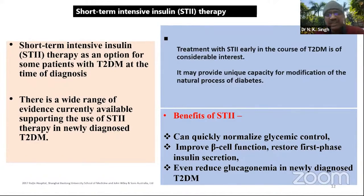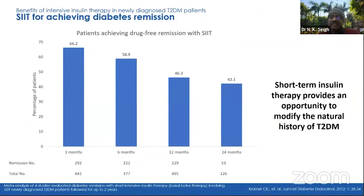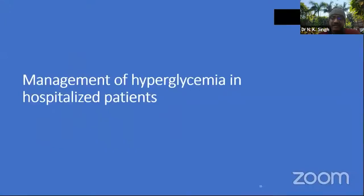My urge is that in specific situations, think about STIIT, because this is now an ADA recommendation — initial therapy has the advantage of being effective where other agents are not, and should be considered as part of any combination regime. When hyperglycemia is severe with catabolic features — weight loss, very high triglycerides, ketosis present — definitely go for insulin. The short-term intensive insulin therapy appears to be a very good option for at least some patients with type 2 diabetes at diagnosis.